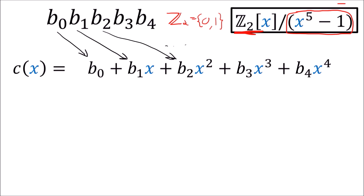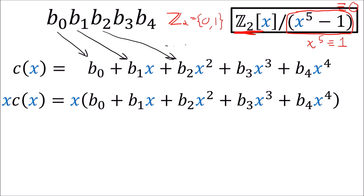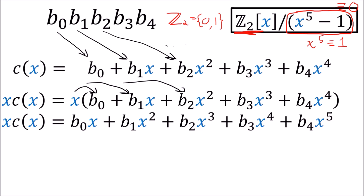Recall that whatever is behind the slash is equivalent to 0, so x^5 is equivalent to 1. When we multiply the polynomial c(x) by x, we distribute x to all terms, increasing the power of x by 1. We get an x^5 term, but since we're working mod x^5 minus 1, x^5 is equivalent to 1, so we replace it with 1.